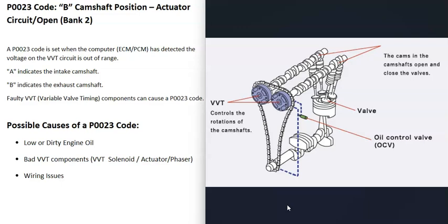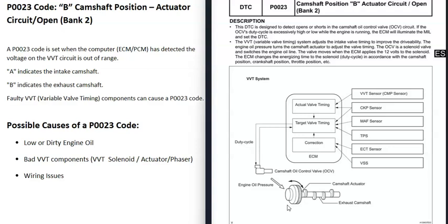When you get this P0023 code, the computer is seeing a problem inside the system, mainly with actuator B on the bank 2 side of the engine. It needs to be troubleshot. One thing to note is that variable valve timing systems can be named differently and designed differently depending on the manufacturer, so components may be placed differently. It's a good idea to get a diagram of the variable valve timing for your specific vehicle.